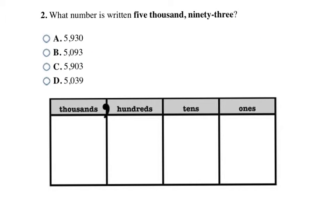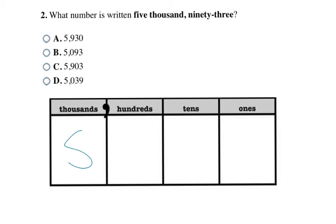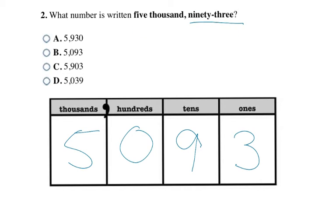This question asks us again to take a number in written form and write it in standard form. It says five thousand, ninety-three. I'll write a five in the thousands column. Ninety-three is a tens and ones number — it doesn't have a hundreds digit — so I fill in a zero for the hundreds place. The chart helps us not forget any numbers. So five thousand ninety-three is my final answer, which is choice B.